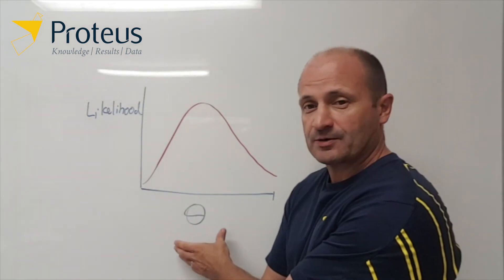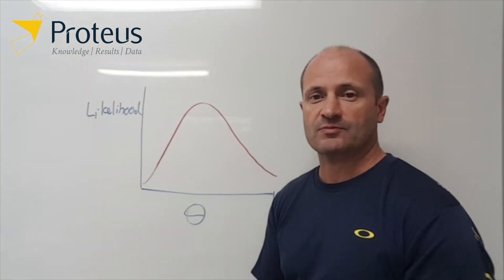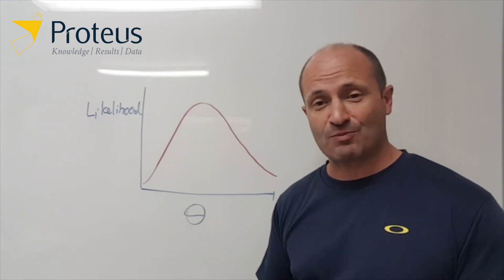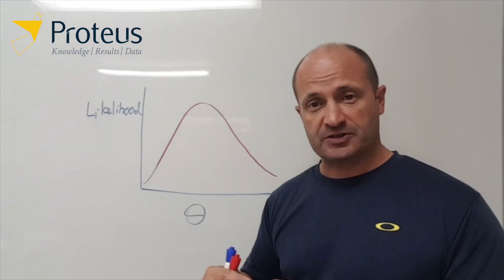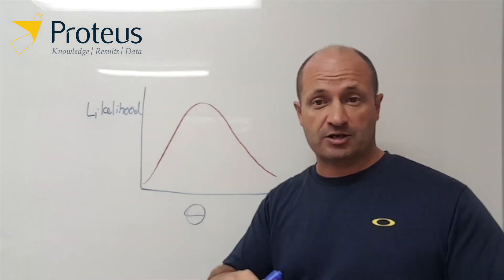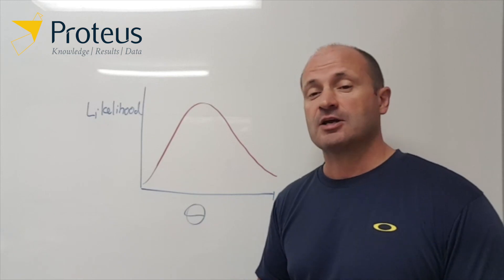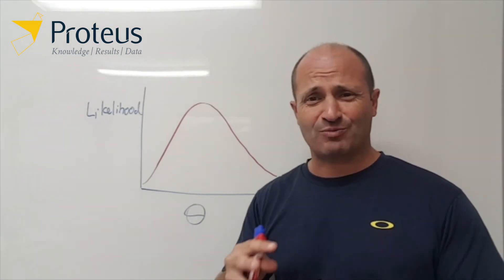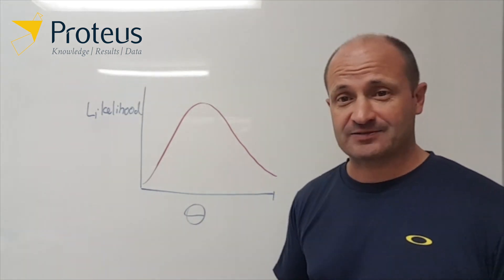With just one parameter it's a smooth line, but with more complex situations involving more parameters it becomes a surface. With two parameters it's like a terrain map out in the landscape. With three, four, five, or six parameters we end up with really complicated multi-dimensional surfaces that are very hard to visualize.